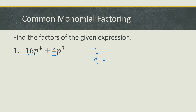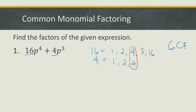We have 16 and 4. The factors of 16 are 1, 2, 4, 8, and 16. The factors of 4 are 1, 2, and 4. Therefore, their greatest common factor is 4.